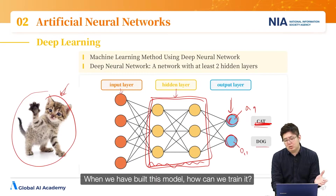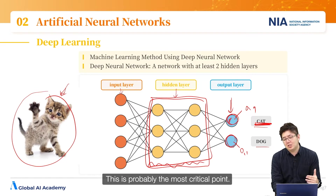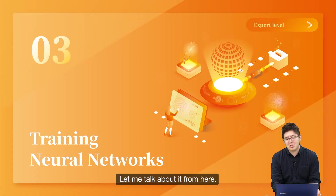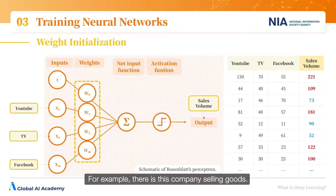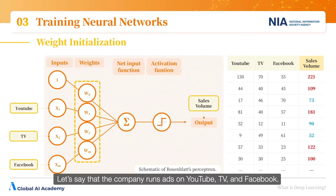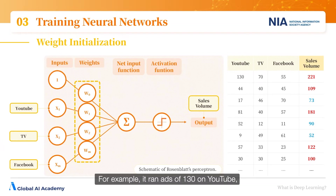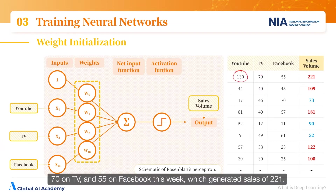When we have built this model, how can we train it? This is probably the most critical point. Let me talk about it using just one perceptron. For example, there is a company selling goods. Let's say the company runs ads on YouTube, TV, and Facebook. It ran ads of 130 on YouTube, 70 on TV, and 55 on Facebook this week, which generated sales of 221.